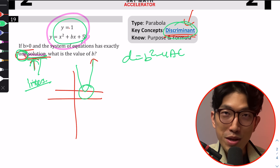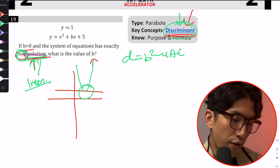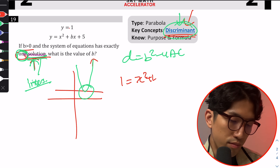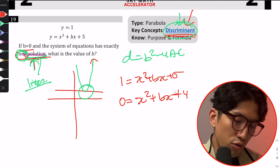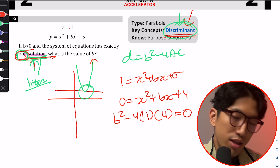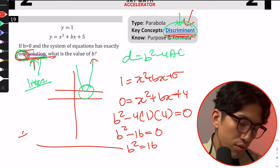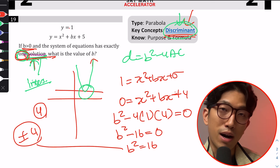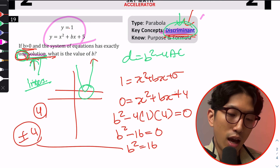The purpose of the discriminant is to find the number of intersections between a line and a parabola. To solve this question, set the equations equal to each other: 1 = x² + bx + 5, then move everything to one side to get 0 = x² + bx + 4. The discriminant is b² − 4(1)(4). Because it has exactly one solution, discriminant equals zero, so b² − 16 = 0, meaning b = ±4. Since b must be greater than zero, the answer is positive 4.